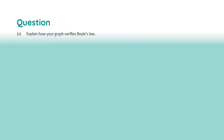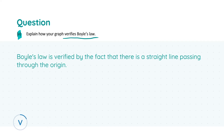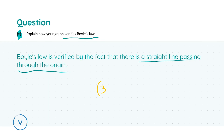In part v we're asked to explain how the graph itself verifies Boyle's law. The key takeaway is straightforward: the line of best fit is a straight line that passes through the origin. This straight line through the origin shows a direct proportionality, which thereby verifies Boyle's law. For this you get three marks — all you need to include is that it is a straight line passing through the origin.